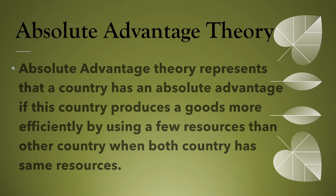Absolute advantage theory represents that a country has an absolute advantage if this country produces goods more efficiently by using fewer resources than another country, when both countries have the same resources. This means that when one country is able to produce more product than the other country using the same resources, this country has absolute advantage.